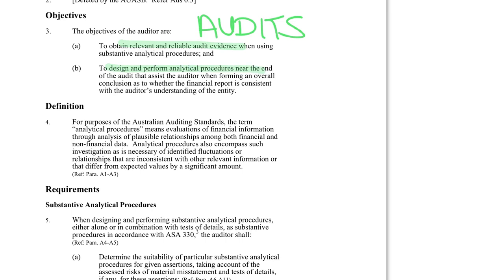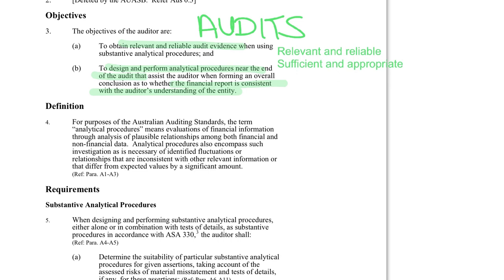and that evidence needs to be sufficient and appropriate. We also need to design analytical procedures near the end of the audit to make sure the financial report is consistent with what we know about the company. Under ASA 500, our evidence needs to be relevant and reliable, and we have to collect a sufficient and appropriate amount of that evidence.